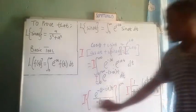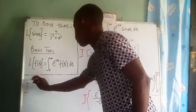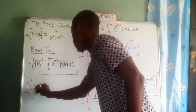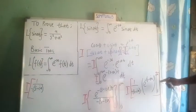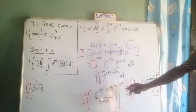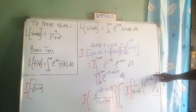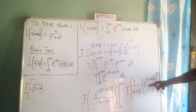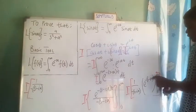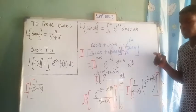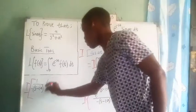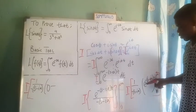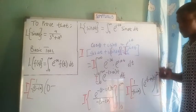So we have the imaginary part of 1 over negative (s minus ia), times the expression evaluated from 0 to infinity. At t equals infinity, e raised to the negative infinity is essentially 1 over e to the infinity, which is 0. At t equals 0, e raised to the power of 0 is 1. So we get the imaginary part of 1 over (s minus ia).